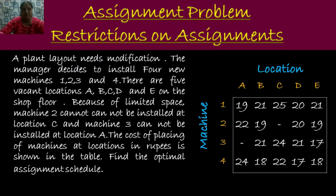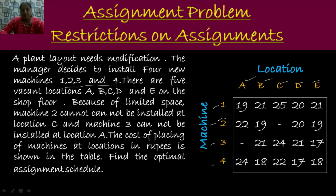Let me now move on to an example. A planned layout needs modification. A manager decides to install 4 new machines — 1, 2, 3, 4 — and there are 5 vacant locations available on the shop floor: A, B, C, D, E. Because of limited space, machine 2 cannot be installed at location C, and machine 3 cannot be installed at location A. The cost of placing machines at locations is given in a cost matrix, and we have to find the optimum assignment schedule.